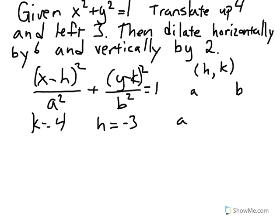a is the amount that we dilate horizontally. So since we're told to dilate horizontally by 6, a is 6. And b is the vertical dilation. And we're told to dilate vertically by 2, so b is 2.